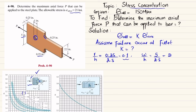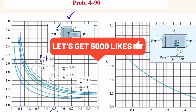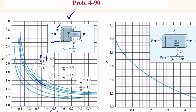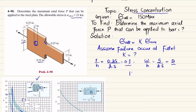So r/h = 0.25/2.5 = 0.1, and w/h = 2. Drawing a vertical line from r/h = 0.1 on the graph, it intersects the curve for w/h = 2. Reading off the graph, this gives K equal to 2.4.